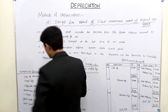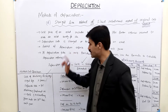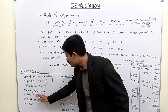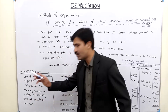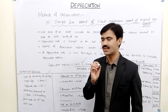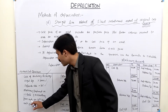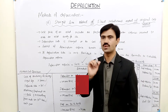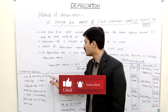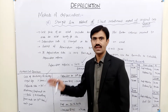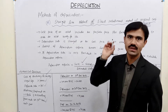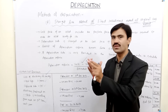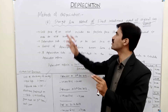For example: cost price of machinery is 100,000; useful life is three years; depreciation rate is 10%. The machinery was purchased on 1st January 2016, and the accounting year ends on 31st December each year. We need to calculate depreciation using the straight-line method, also called the fixed installment or original cost method.